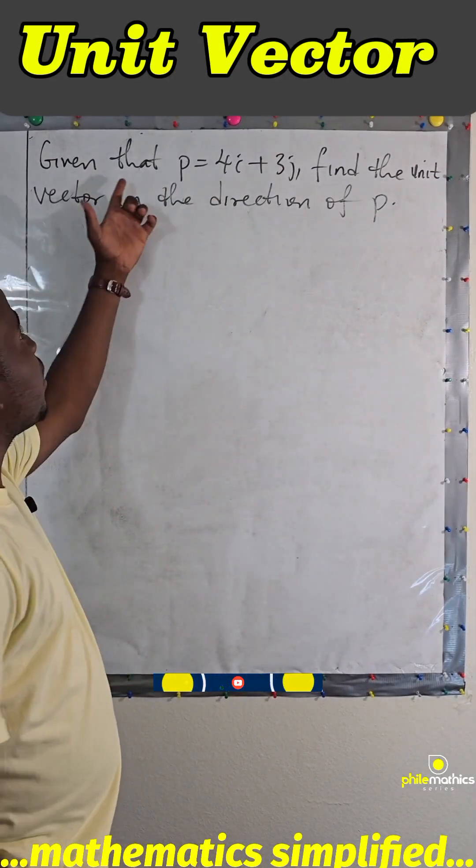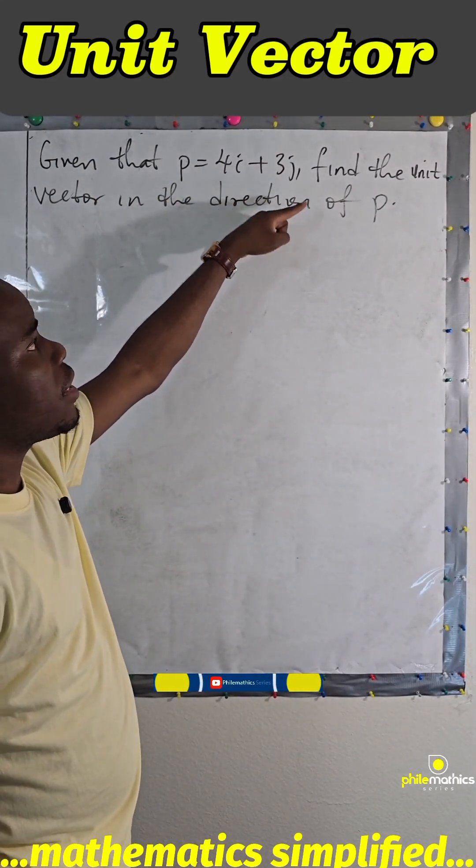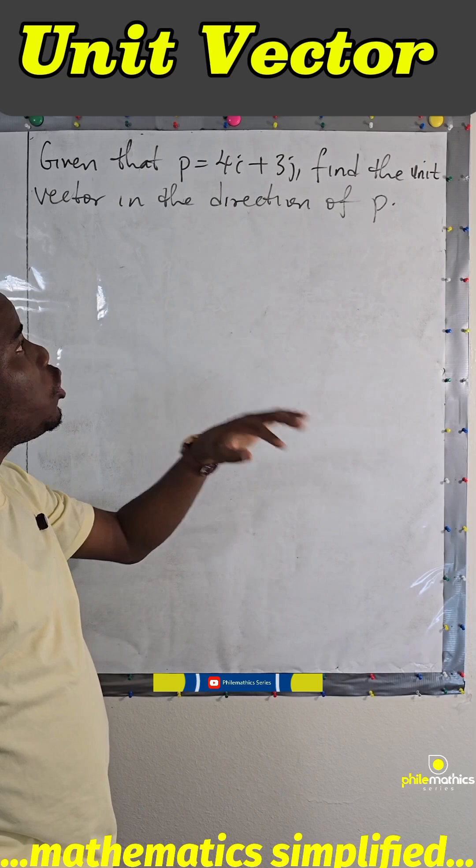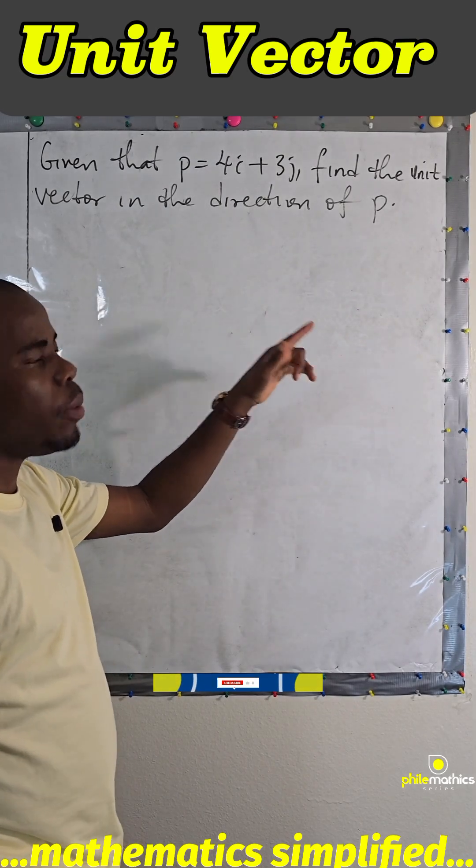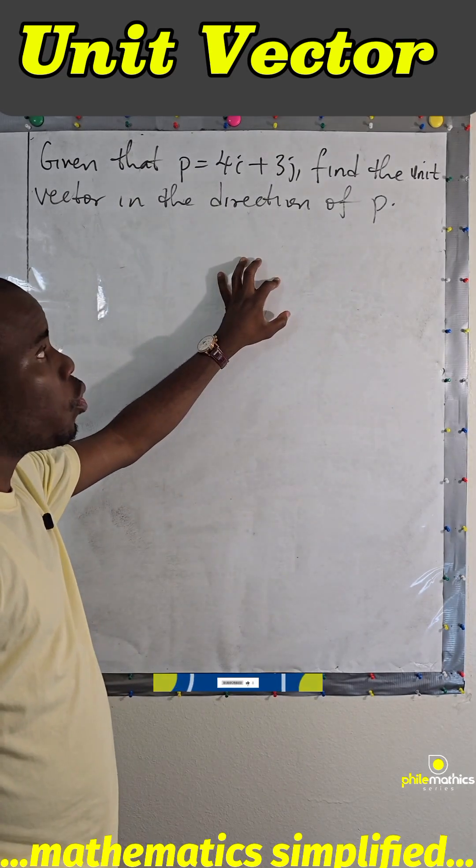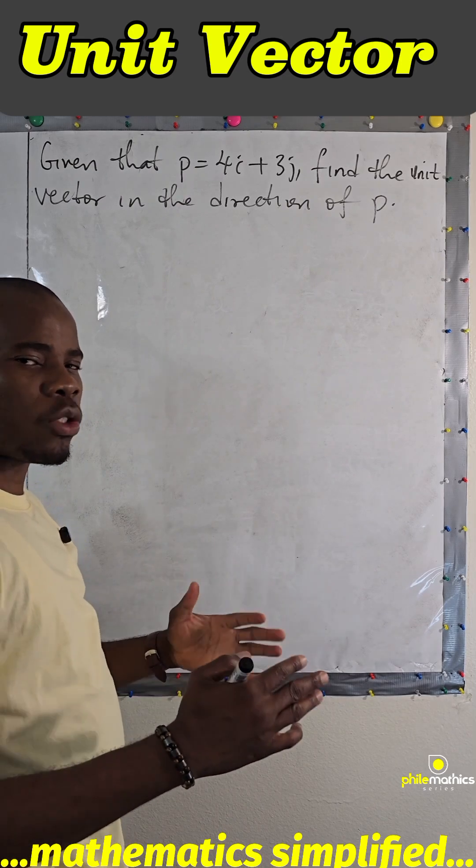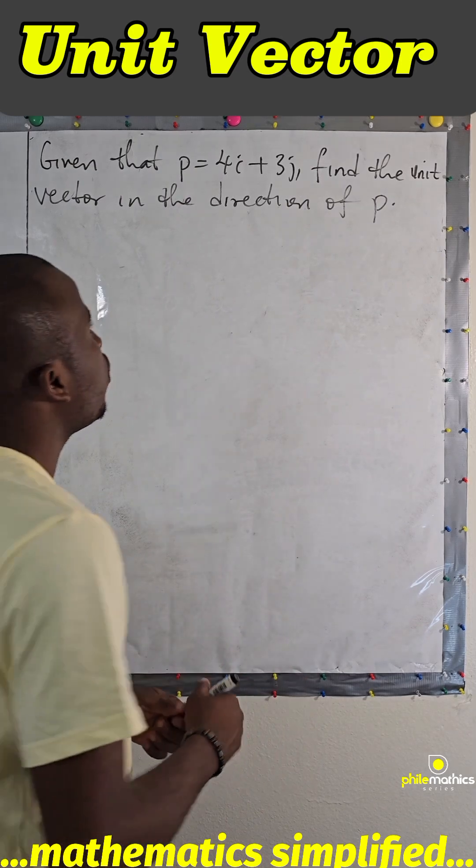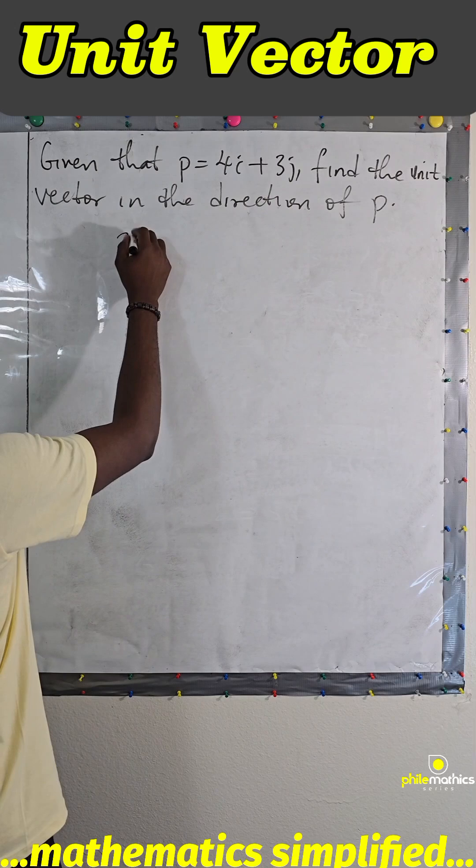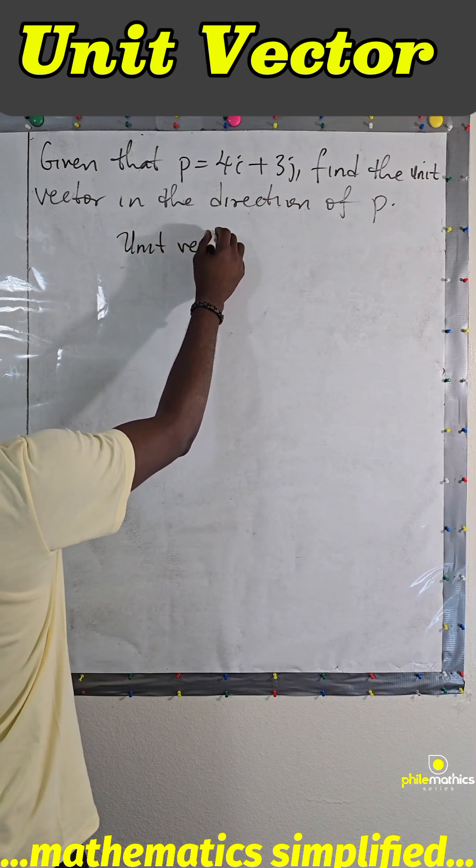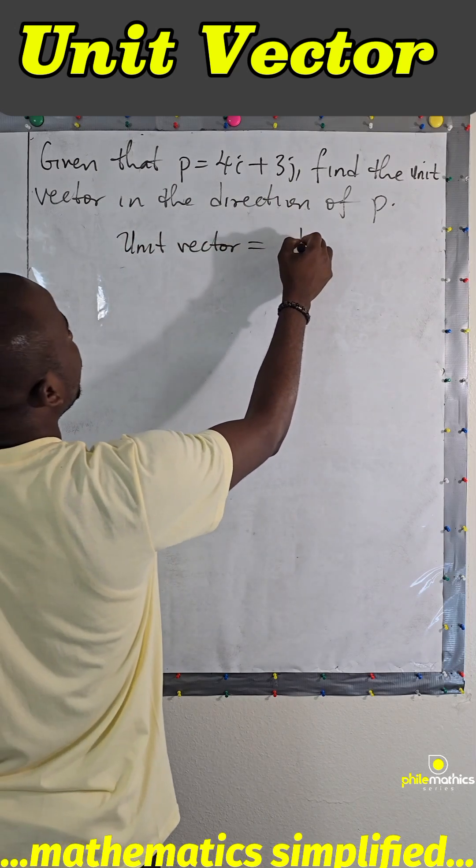We are given that p is 4i plus 3j, and we are asked to find the unit vector in the direction of p. So p is a vector, we are looking for the unit vector. A unit vector is a vector whose length is one, it's like a basic vector.